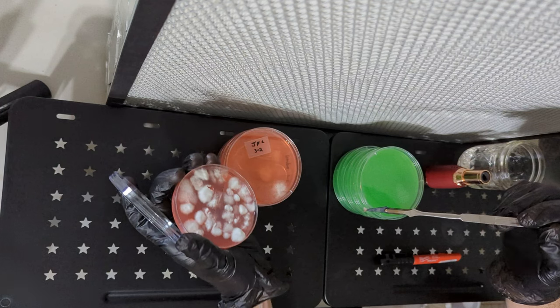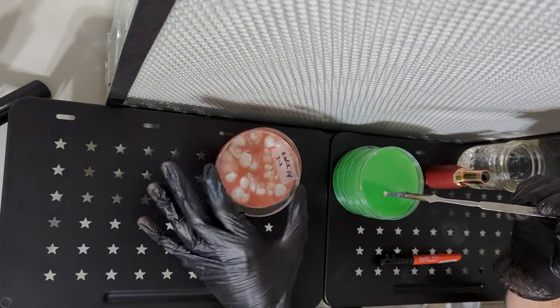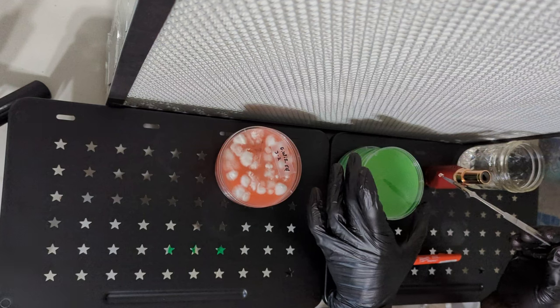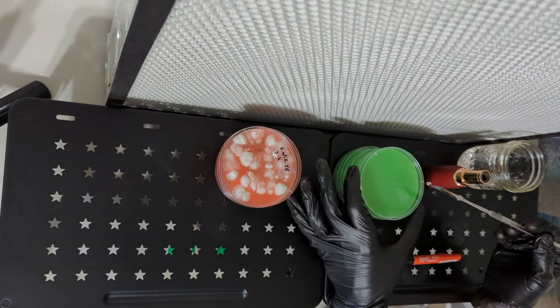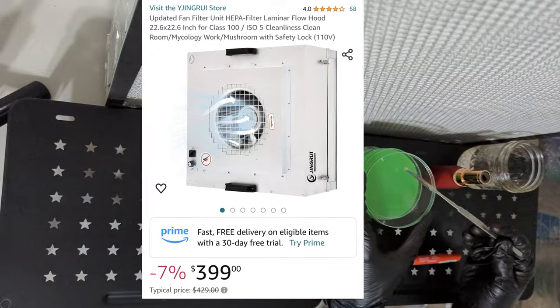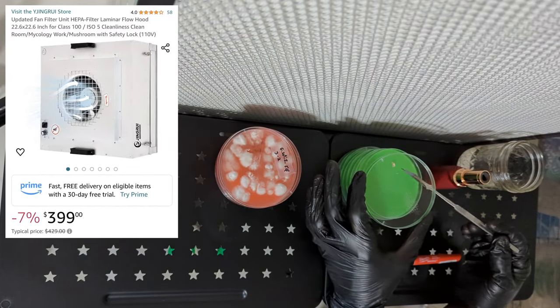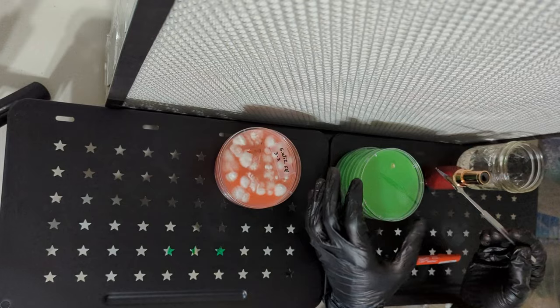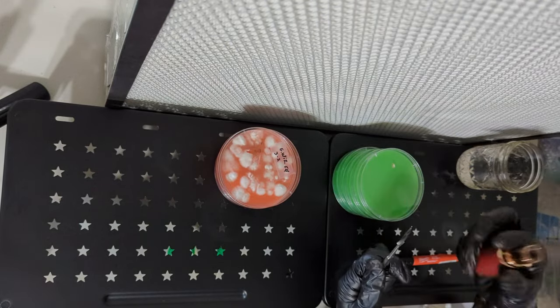If they are well built and taken care of, along with having a pre-filter, FFUs are said to last about 5-10 years depending on usage. I got mine from Amazon for $427. It's a 22x22. It's a little bit small, but it does the job.